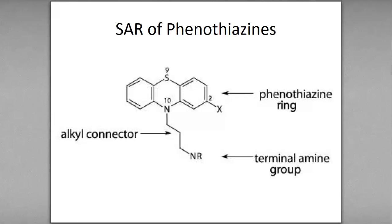In Phenothiazin, the Phenothiazin ring is important for showing activity. This is the Phenothiazin ring, which is an anthracene ring, but in the central ring there are positions 9 and 10. At position 9 there is a sulfur atom, and at position 10 there is a nitrogen atom. At the second position, you have a halo group.